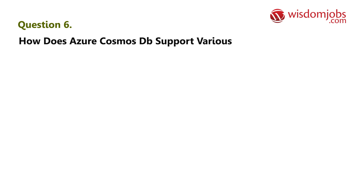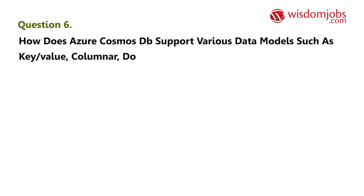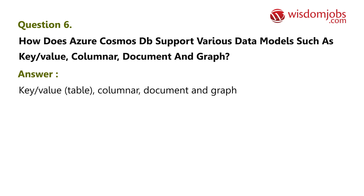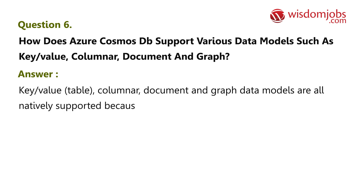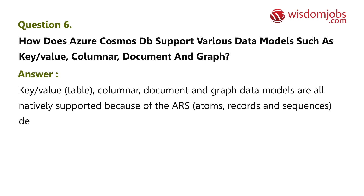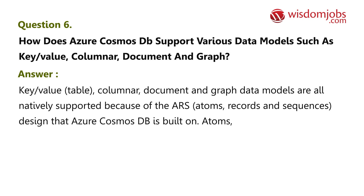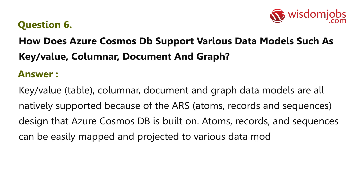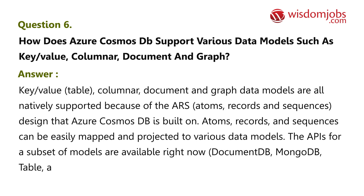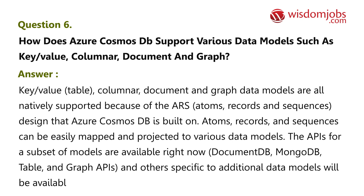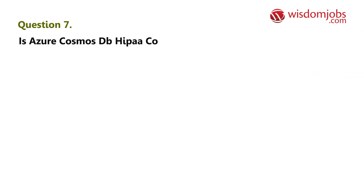Question 6: How does Azure Cosmos DB support various data models such as key-value, columnar, document, and graph? Answer: Key-value, table, columnar, document, and graph data models are all natively supported because of the ARS (atoms, records, and sequences) design that Azure Cosmos DB is built on. Atoms, records, and sequences can be easily mapped and projected to various data models. APIs for document, MongoDB, table, and graph are available right now, and others specific to additional data models will be available in the future.